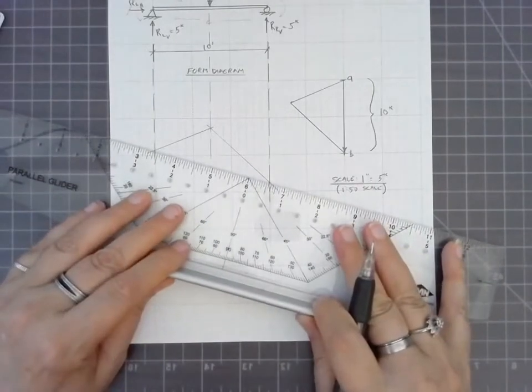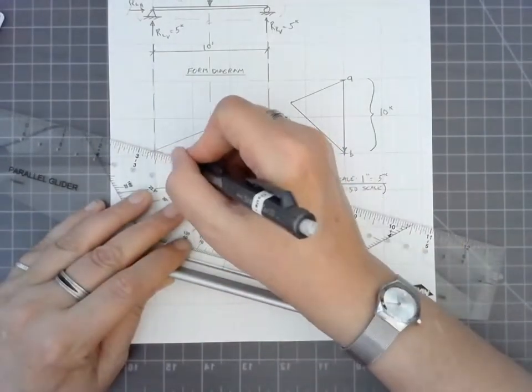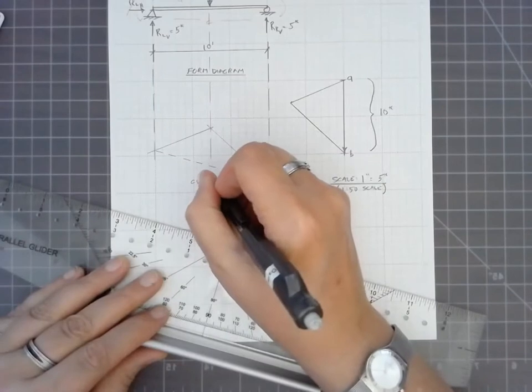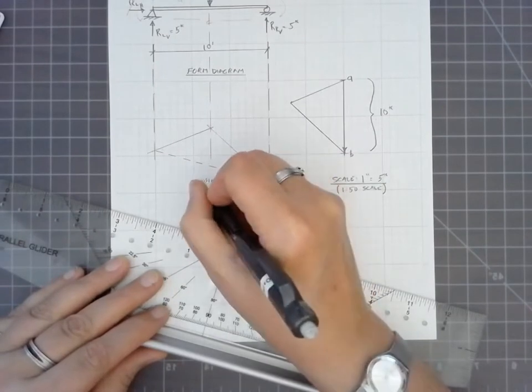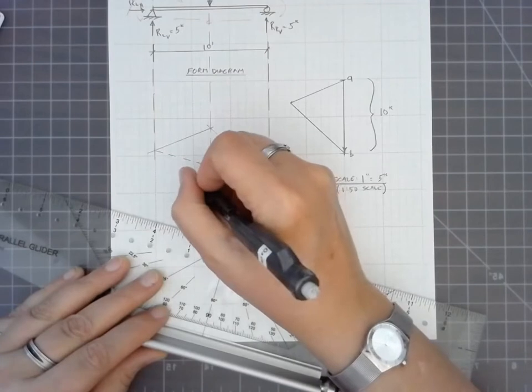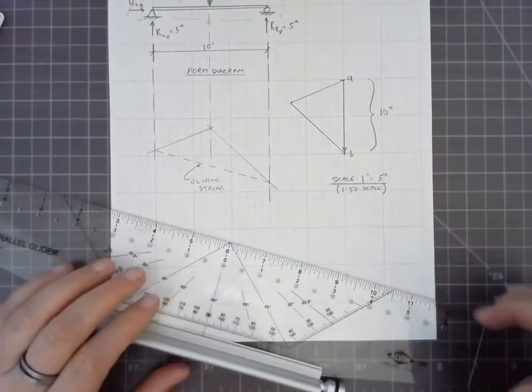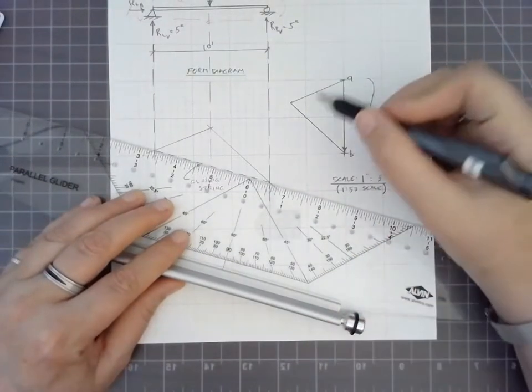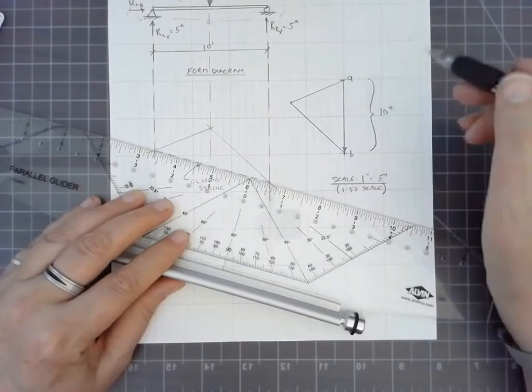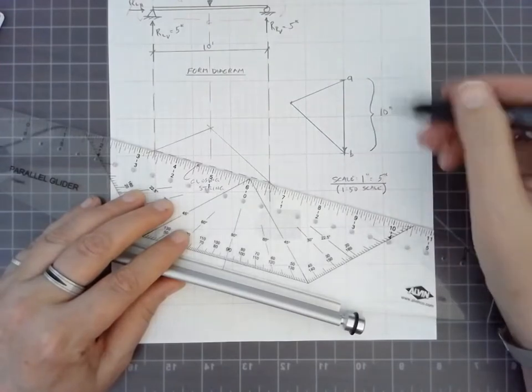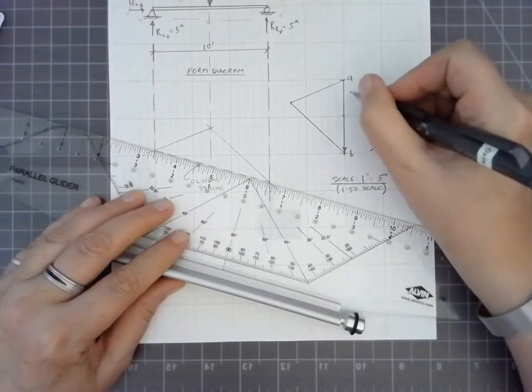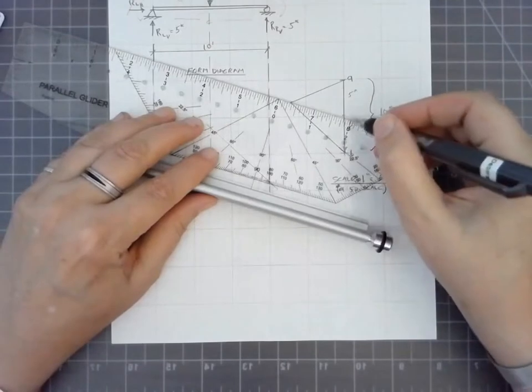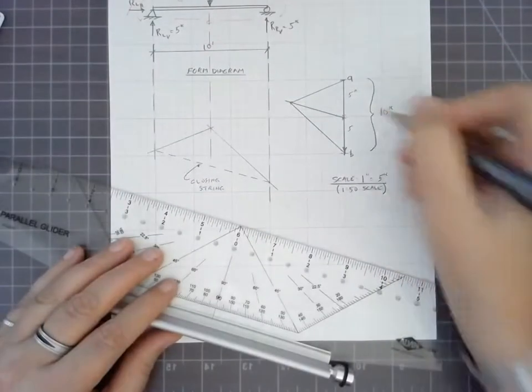Now, the line that closes this we refer to this as the closing string. And that will become more clear when we do arches and cables with this technique. But the key thing is this closing string when I transfer it back to this point will divide the left and right reactions in two. So, if this has worked I should have five kips here and five kips here. And boom! There we go. It divides it exactly in half.